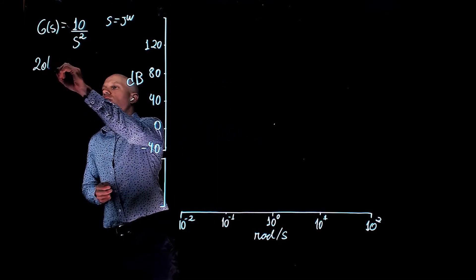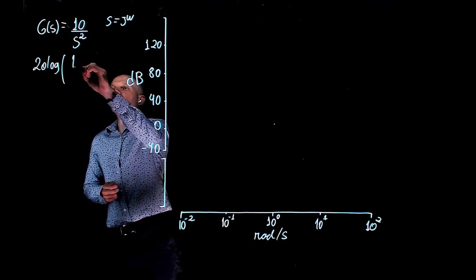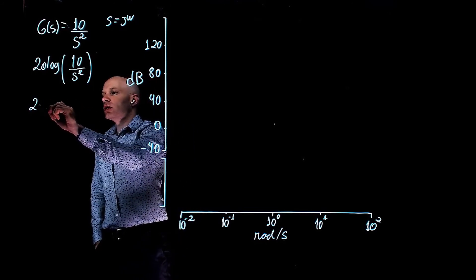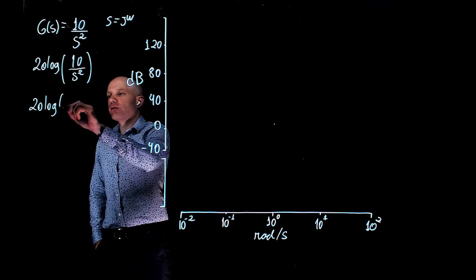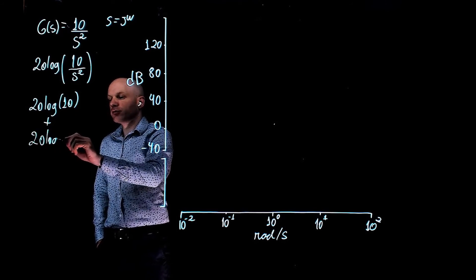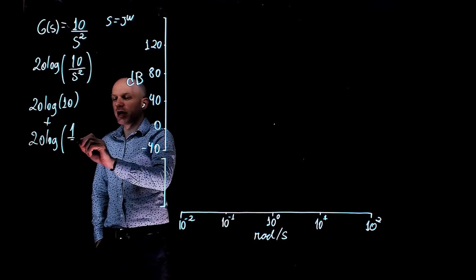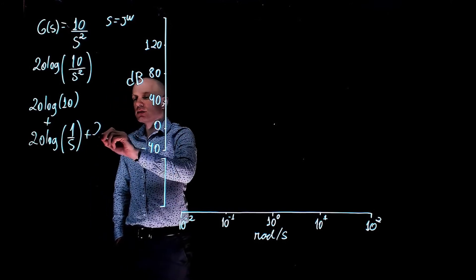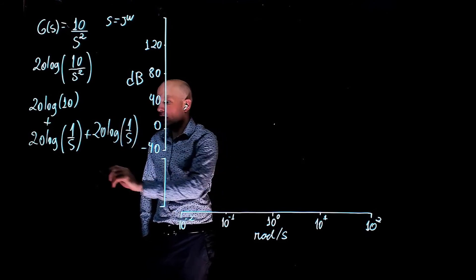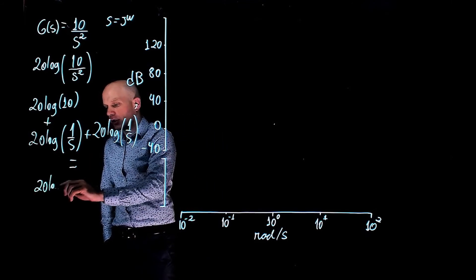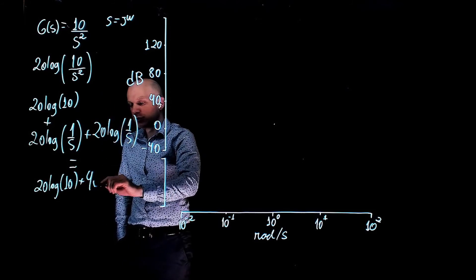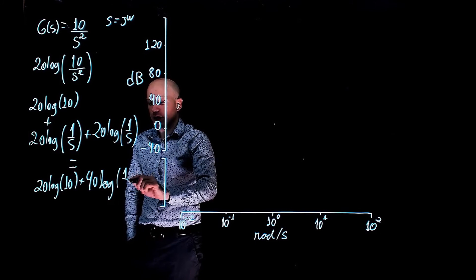The magnitude will be shown in decibels, that is 20 log of 10 over s squared. This can be written as 20 log of 10 plus 20 log of 1 over s plus 20 log of 1 over s, which is equal to 20 log of 10 plus 40 log of 1 over s.